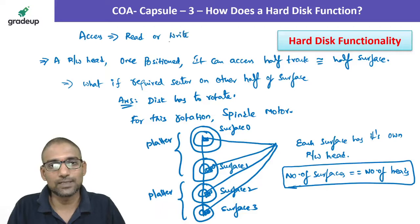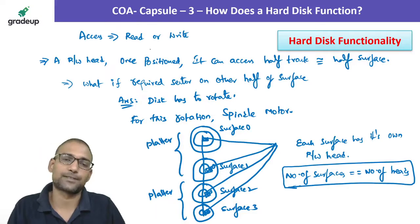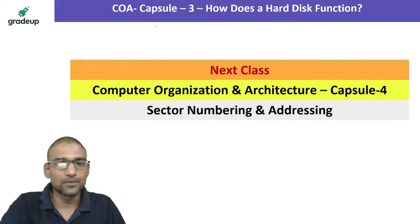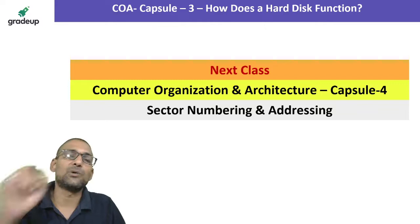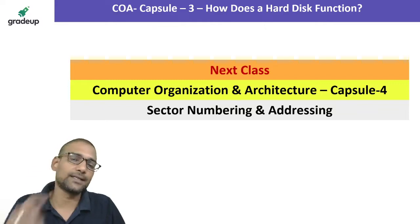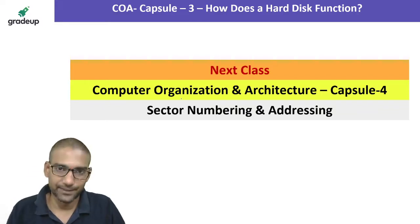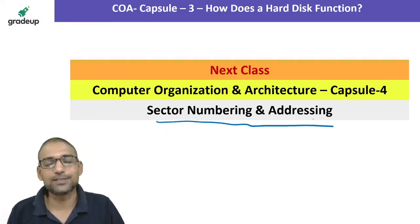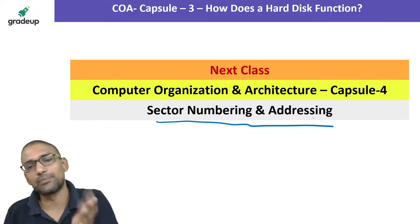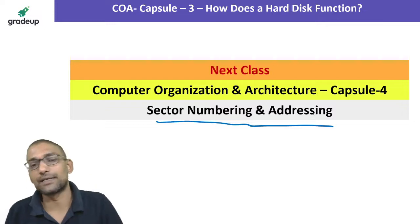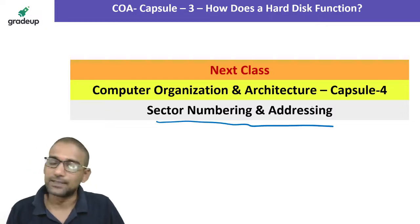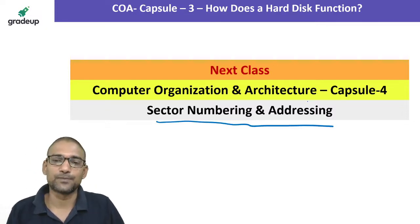Now you have a better idea of how one sector of a hard disk is accessed — whether read access or write access. How a sector is identified by number and address, and how this numbering and addressing differs, will be covered in the next capsule tomorrow.